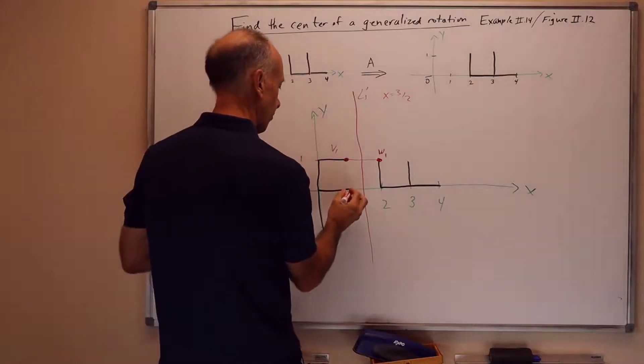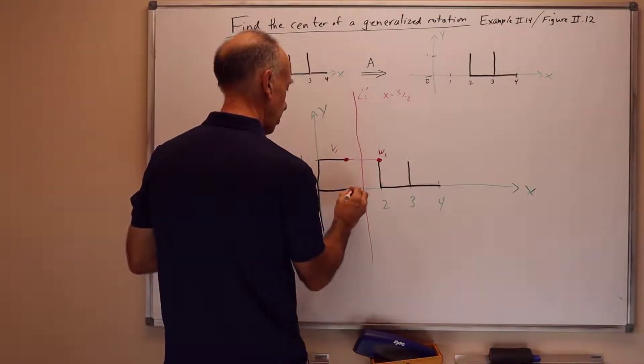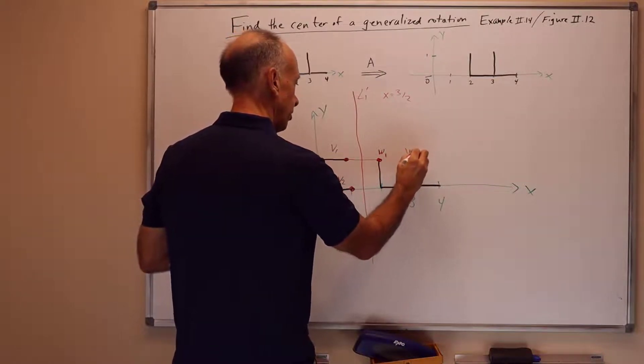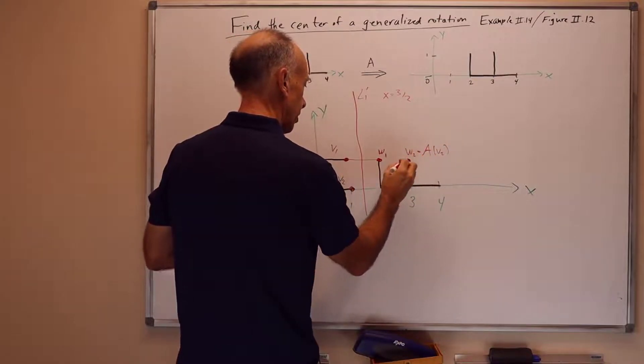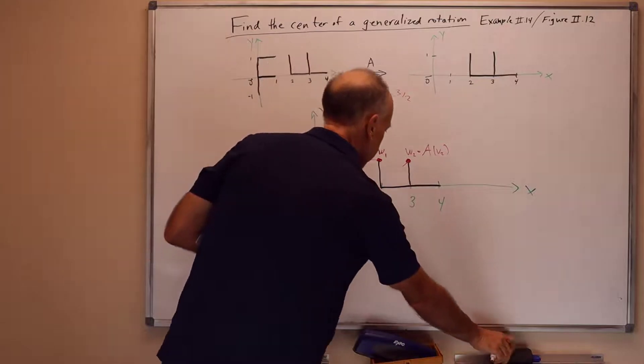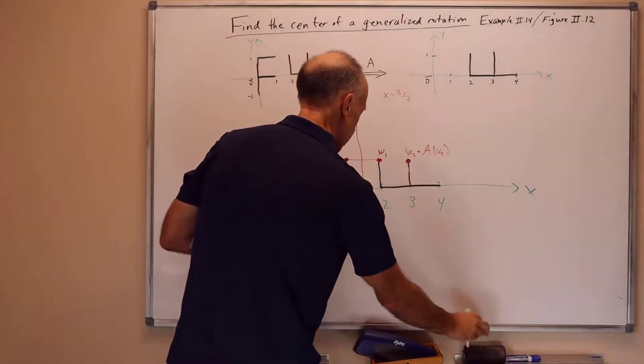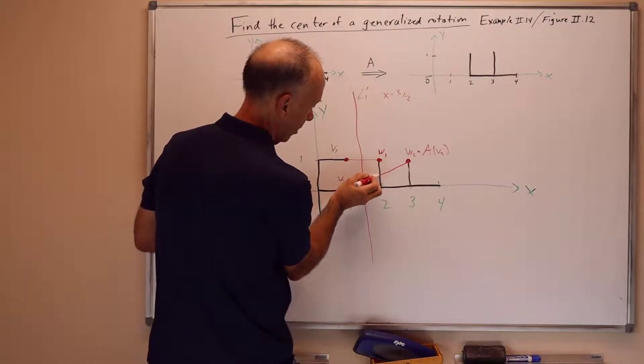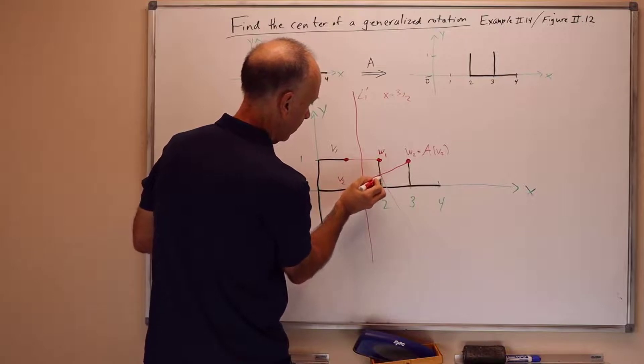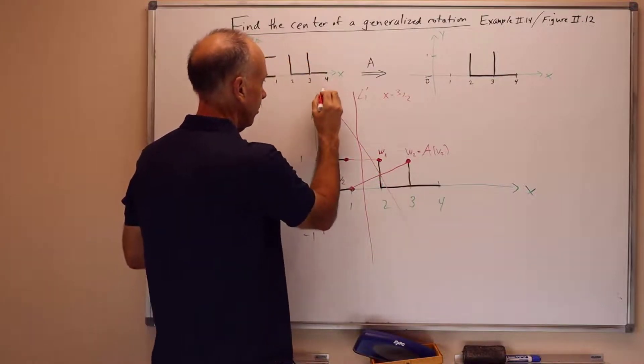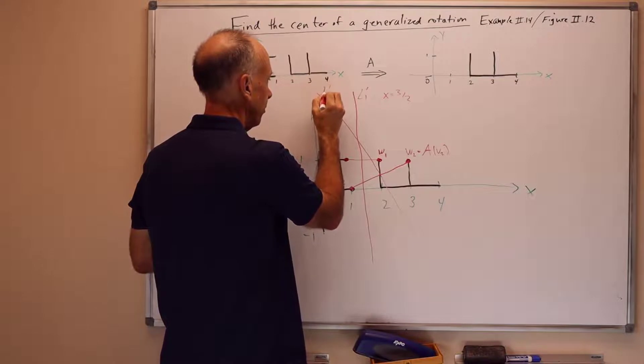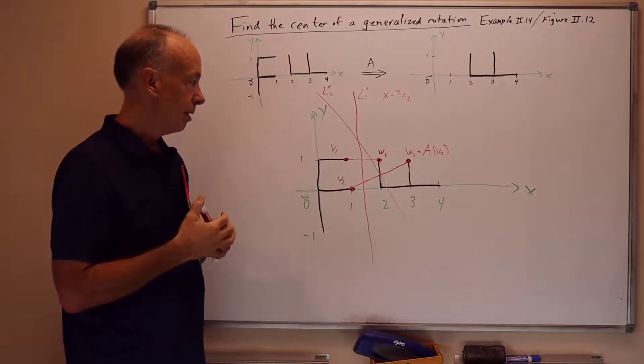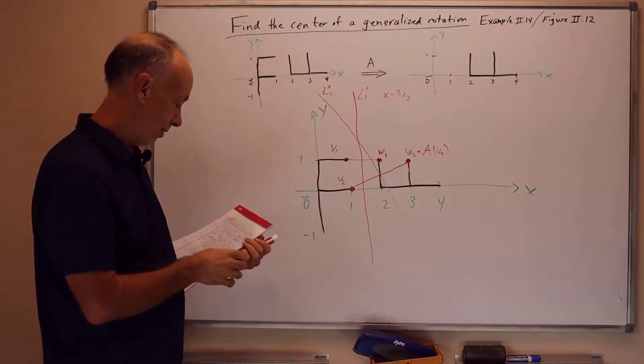Now we're going to pick another choice for v and w. I'll put v2 here. Its image is here, is w2. The line segment joining the two is here. And the perpendicular bisector is here. So this is the l2 prime. l2 prime is the perpendicular bisector of the line segment joining v2 and its image w2 under v.